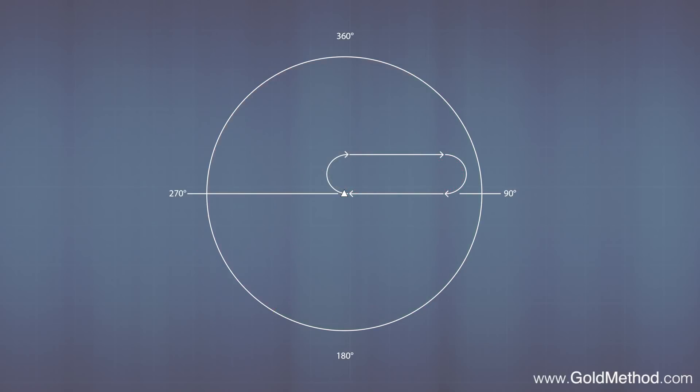Let's assume here that we're going to hold at the 0-9-0 radial from a fix with standard right turns. The first thing we need to do is draw an imaginary line through the fix and the holding course, dividing both sides into 70-degree and 110-degree sectors.